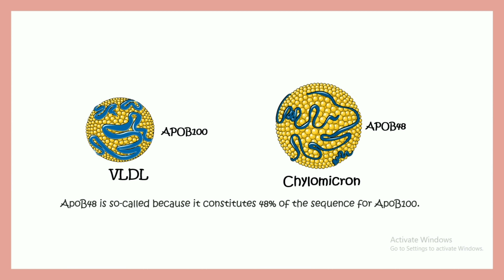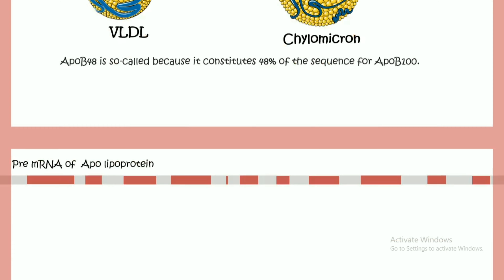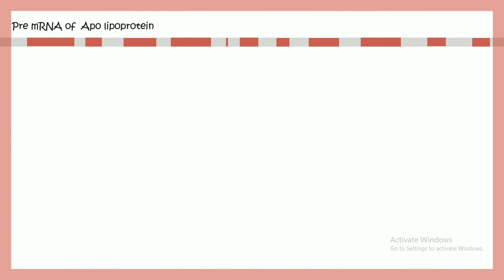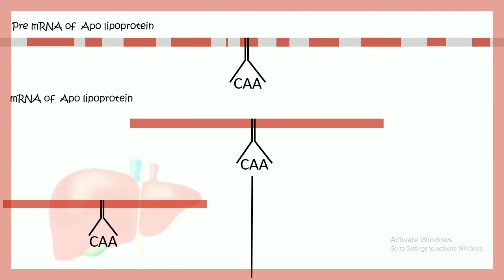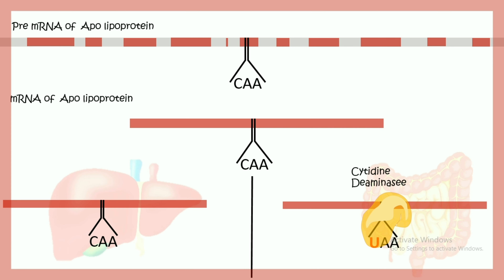Why does this difference occur? To understand that, let's look at the gene of apolipoprotein. This is the pre-mRNA, and after processing you would see what the mRNA looks like. Depending upon the tissue type — liver or intestine — there would be cytidine deaminase activity.